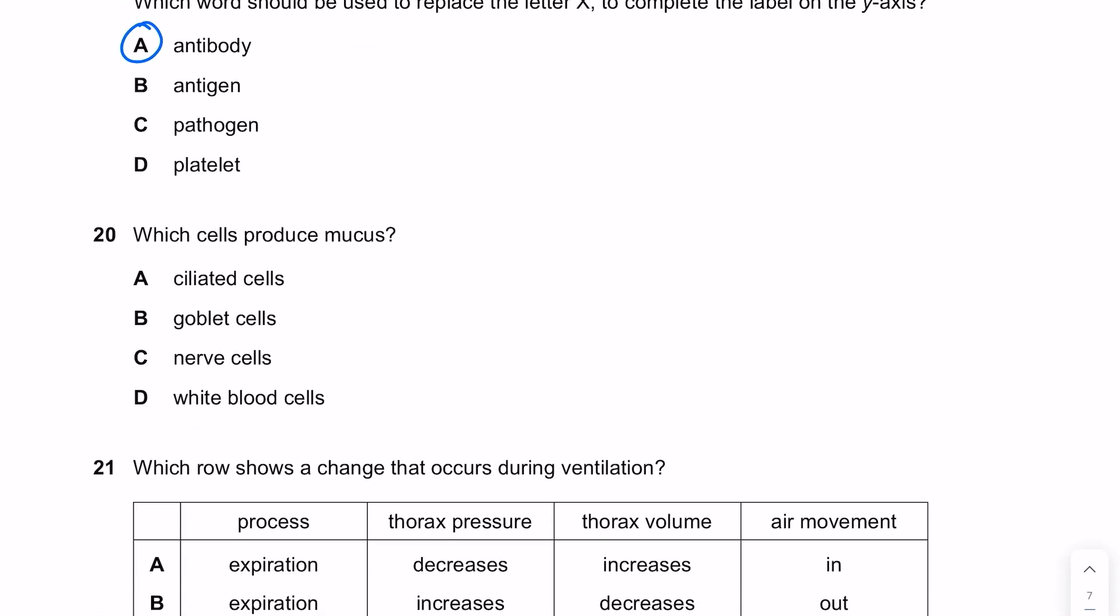Which cells produce mucus? We're looking at the windpipe, the trachea. It is actually the goblet cells that secrete the mucus, and then the ciliated cells which waft that mucus laden with bacteria up to the mouth where it can be swallowed.